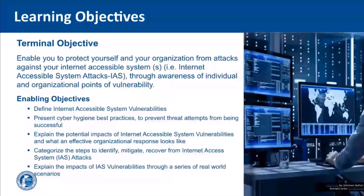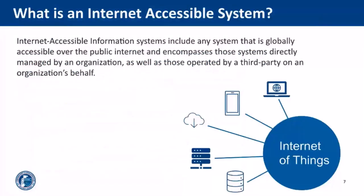So now I'm going to hand it over to my partner Mike to explain what IAS actually means. An internet accessible information system is essentially any system that is globally accessible over the public internet — in other words, it has a publicly routed IP address or a hostname that resolves publicly in DNS to such an address. This includes systems directly managed by an organization as well as those operated by a third party on an organization's behalf.